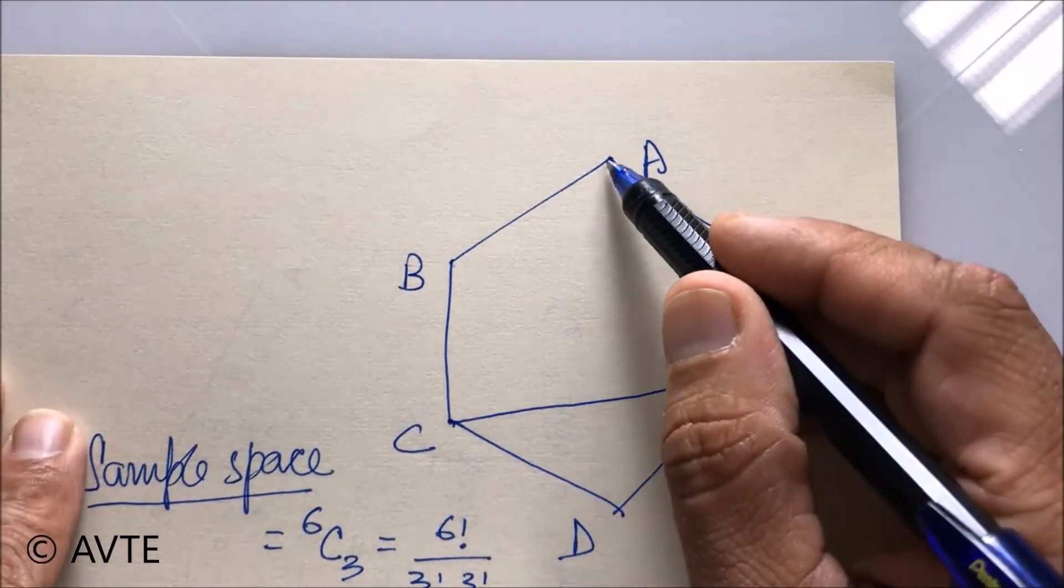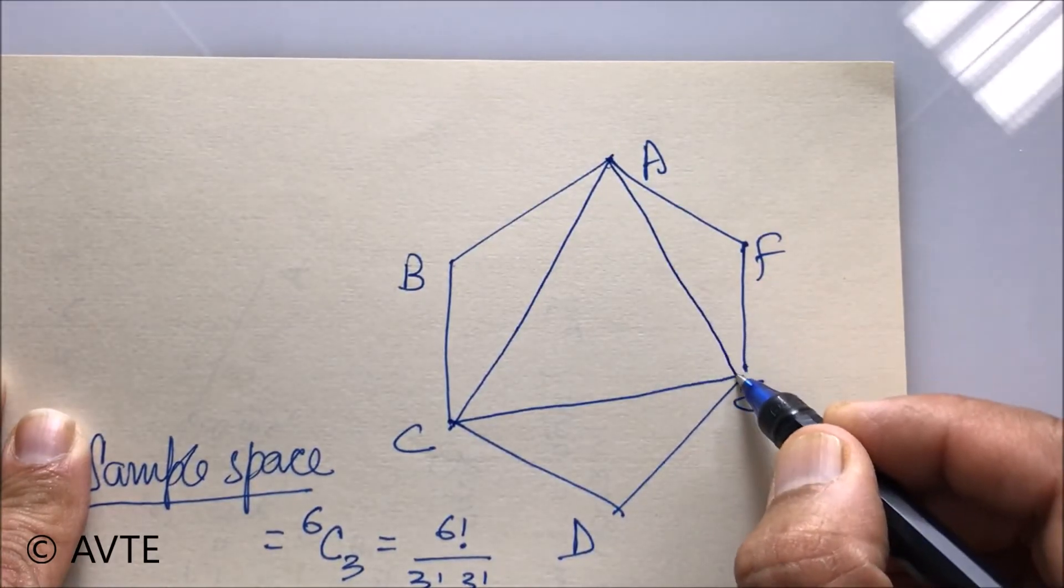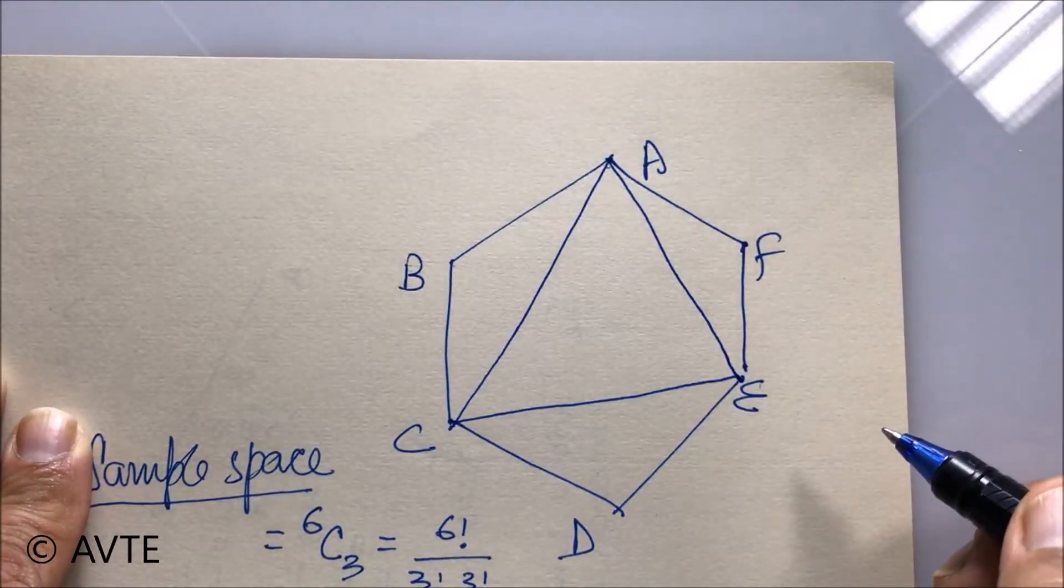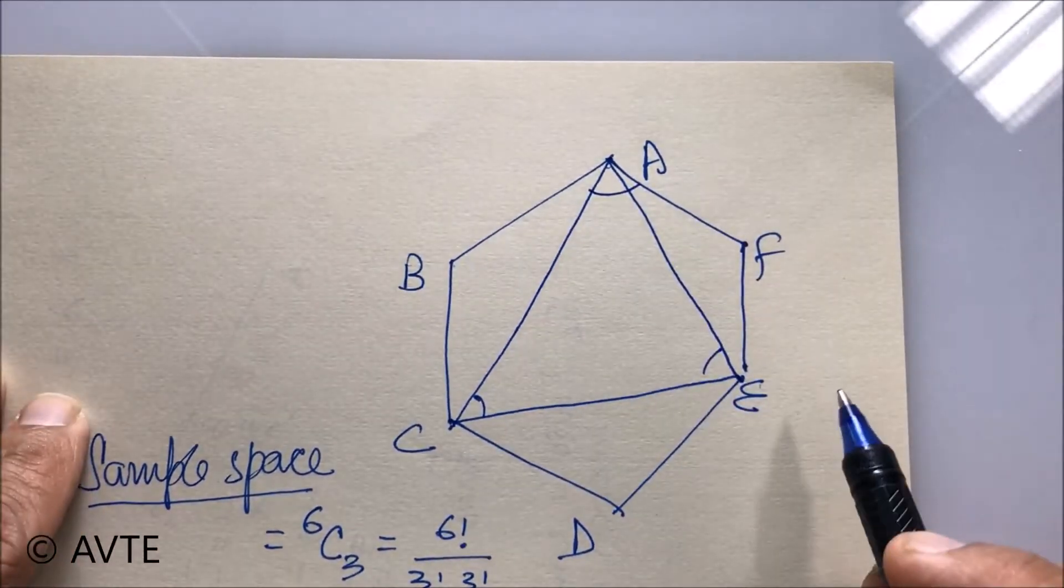If I join ACE, this will be 60 degrees. Each angle will be 60 degrees. So hence this will be equilateral.